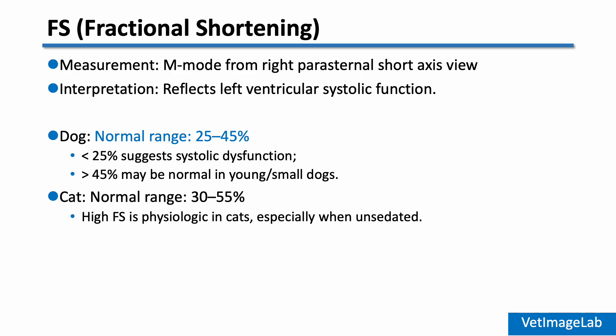In cats, FS is naturally higher. The normal range is around 30 to 55 percent, and many healthy cats fall between 45 and 50 percent. It's also important to note that high FS is physiologic in cats, especially when they are awake and not sedated.